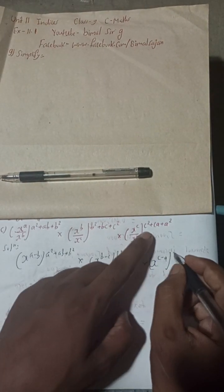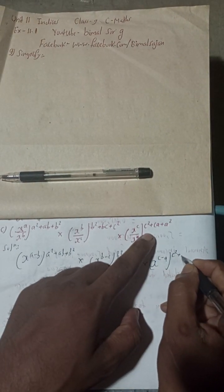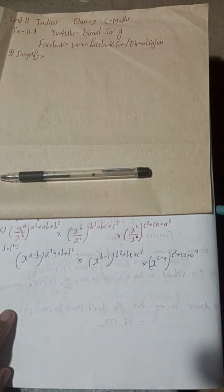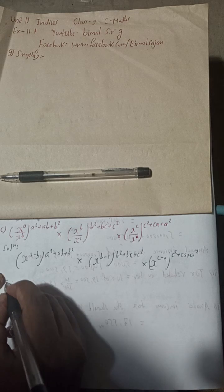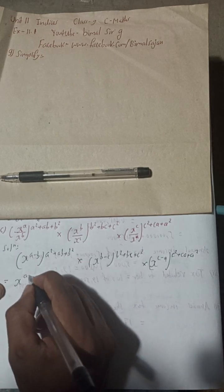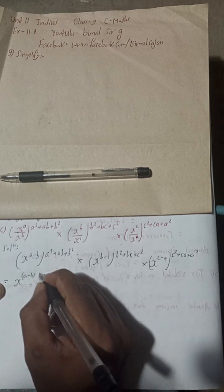And then the power, this is c² + ca + a². Now here, this is power, so we can write x to the power (a - b) bracket.